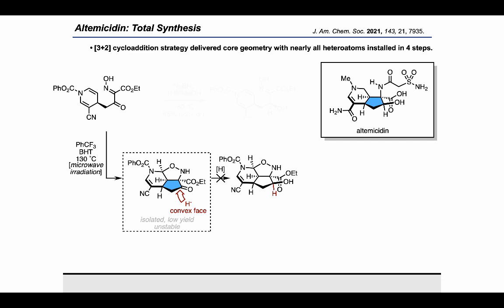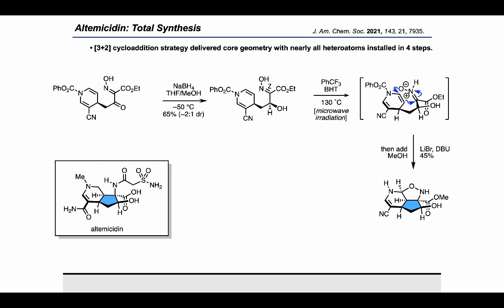We reasoned that reduction of the ketone prior to the cycloaddition could potentially alleviate the problem of retro-addition and that the incorporation of an additional sp3 center might provide a more optimal transition state for the dipolar cycloaddition. To this end, the ketone was subjected to sodium borohydride at low temperature to give the corresponding alcohol. This maneuver indeed turned out to give us a superior cyclization substrate to the ketone and provided the desired tricycle. The reaction was then telescoped through a second step by treatment of the reaction mixture with lithium bromide, DBU in methanol to cleave the phenyl carbamate and give the corresponding highly polar tricycle as a single diastereomer.